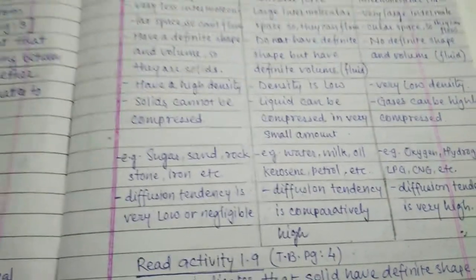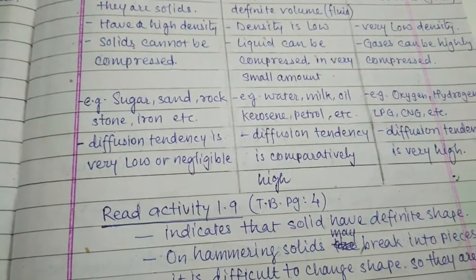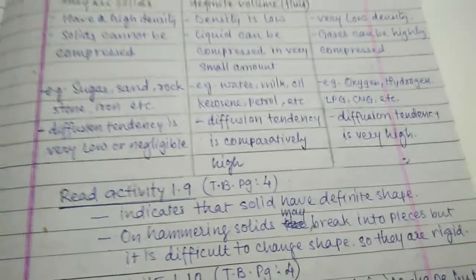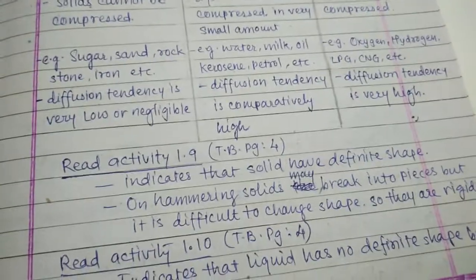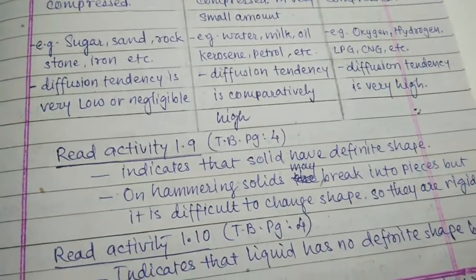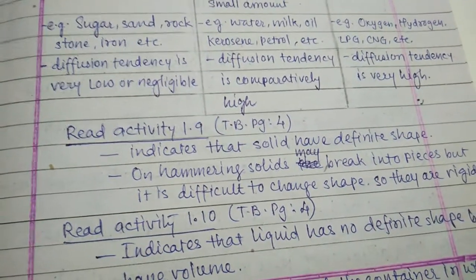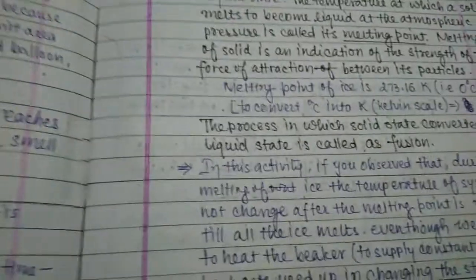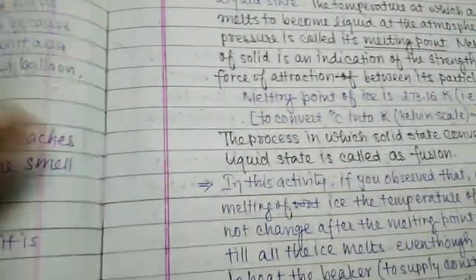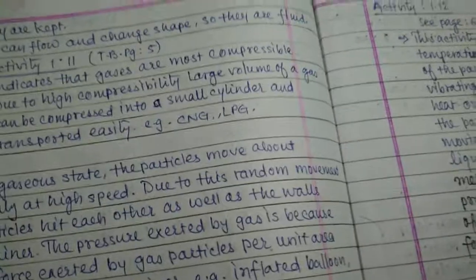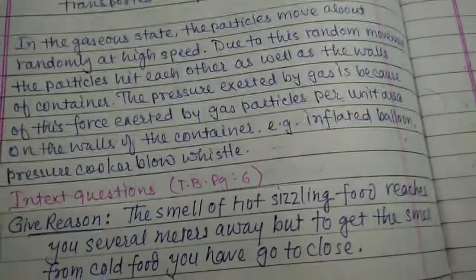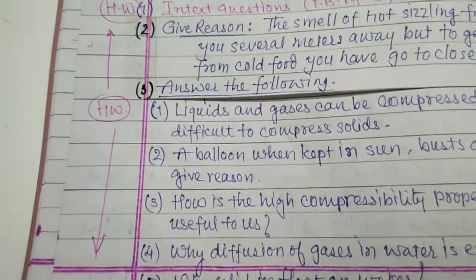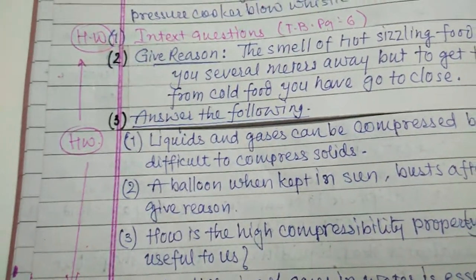Gases also have a tendency to flow like liquids, so they are also called fluid. Gases show the property of diffusing very fast — as we discussed, the smell of a hot sizzler reaches many meters away. Gases are highly compressible; LPG and CNG are examples of highly compressible gases. In the gaseous state, particles move randomly at high speed, causing gases to exert pressure on the walls of the container.